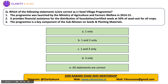Next question: which of the following statements is or are correct with respect to Seed Village Program or Beech Gram Yojna? The program was launched by the Ministry of Agriculture and Farmers Welfare in the year 2014-15. It provides financial assistance for the distribution of foundation or certified seeds at 50% of seed cost for all crops. And the program is a key component of the Sub-mission on Seeds and Planting Material.